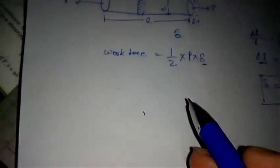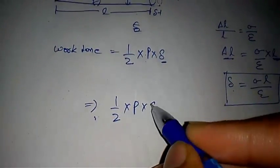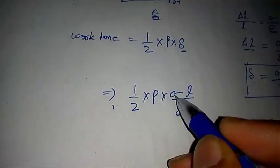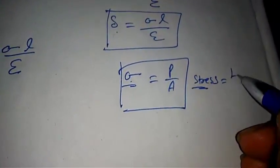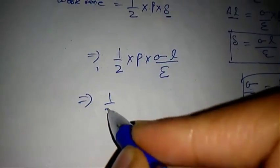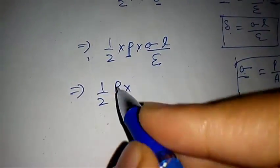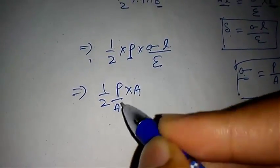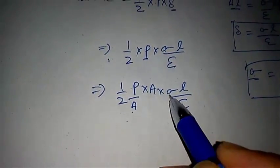Let's put this expression for Delta into the work done formula. Work done becomes one-half times P times sigma L over E. Now, sigma equals force divided by area — stress is equal to load by area — so P equals sigma times A.